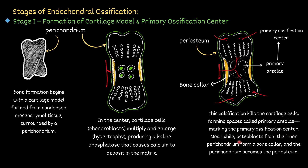At the same time, osteoblasts from the inner perichondrium form a bone collar, and the perichondrium becomes the periosteum. In the inner layer of the perichondrium you find osteoblast cells that form the bone collar. After formation of this bone collar, the outermost layer becomes the periosteum — initially it was the perichondrium, but after bone collar formation it becomes the periosteum.